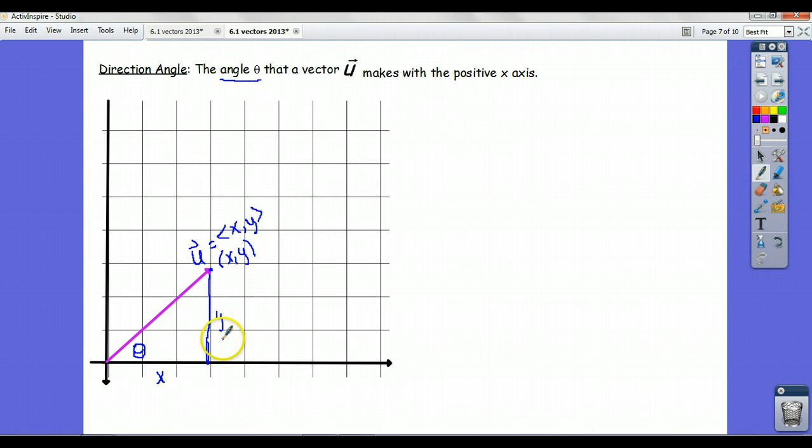There's our direction angle. We'll often be interested, because depending on how the information is given to us, we'll want to be able to go back and forth between a vector described indicating its direction as an angle and component form. What we want is a way to figure out what x and y are if we're just given the direction angle and the length of the vector.